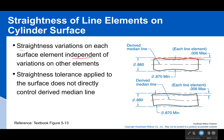Straightness is independent of variations on other elements. The top has to be straight and the bottom has to be straight, but they are evaluated independently. For example, if my straightness tolerance is 0.003, it doesn't matter if the top goes up 0.003 and the bottom goes down 0.003 — that is not a combined 0.006 error. These are separate line elements evaluated individually. As long as each individual line passes, we don't connect them or take the max of one to the minimum of another.